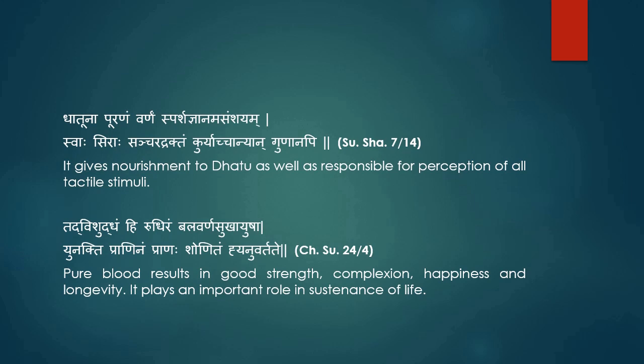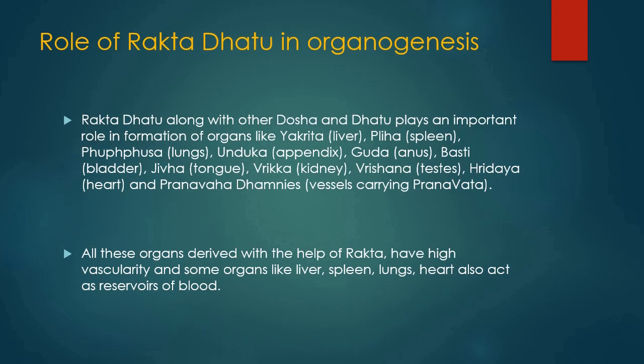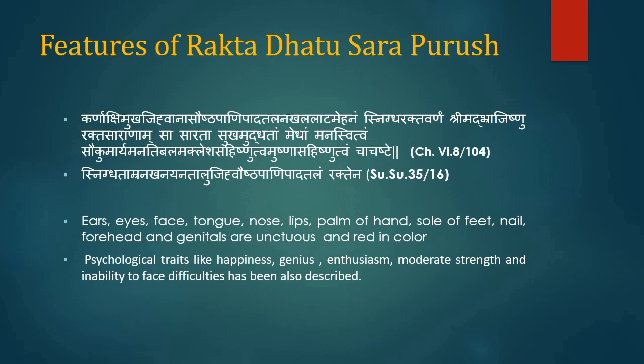Role of Rakta Dhatu in organogenesis: Rakta dhatu along with other doshas and dhatus plays an important role in formation of organs like Yakrit (liver), Pliha (spleen), Fufus (lungs), Undup, Gudha, Jivva, Vrik and Vreshan, Hridaya and Pranvaha Dhamnis. All these organs derived with the help of Rakta have high vascularity, and some organs like liver, spleen, lungs and heart also act as reservoirs of blood.